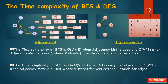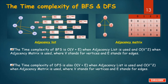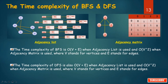Time complexity of BFS and DFS: when an adjacency list is used, the complexity of BFS is O(V + E), where V stands for vertices and E stands for edges. When an adjacency matrix is used, it is O(V²). The same applies to DFS: adjacency list gives O(V + E), and adjacency matrix gives O(V²).